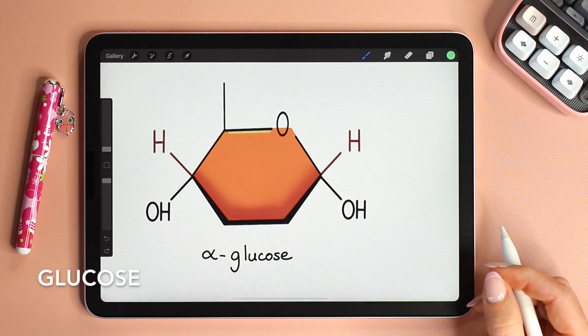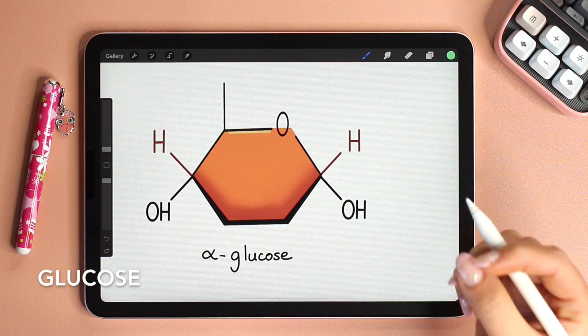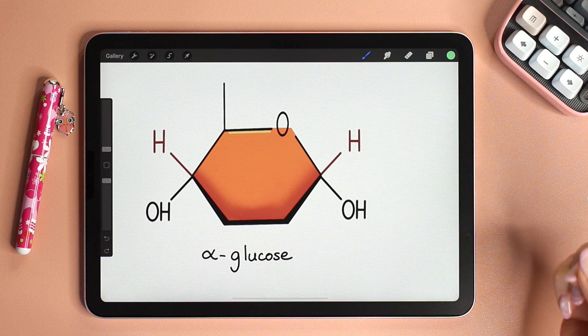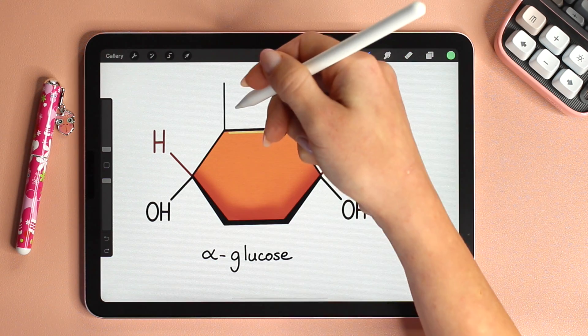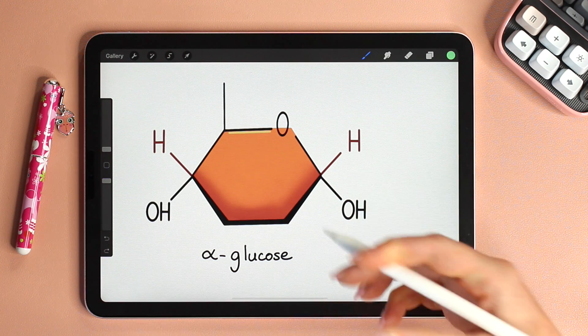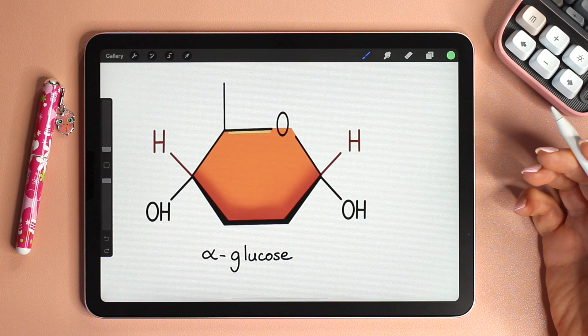Let's start with glucose. Glucose is a monomer. It's a monosaccharide. Mono meaning one, sacchar meaning sugar. Monosaccharide, a sugar made of one unit. And because it's a monomer it's the building block for bigger sugars like starch and cellulose.